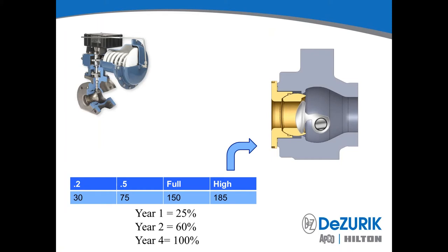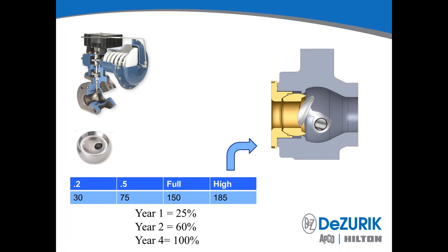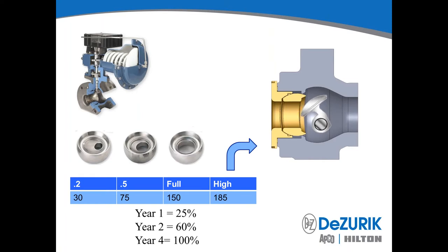Now, if RCVs were installed in place of the globe valves, this is what we would look at. These are the trim reductions in an RCV: we have 0.2 trim, 0.5 trim, full, and high, with corresponding CVs of 30, 75, 150, and 185. For year one you would install the 0.2 trim; year two you would install the 0.5 trim; and so on until you're at the full capacity trim. This is much less expensive than having to change a plug and seat, and much less labor-intensive to change out as well.